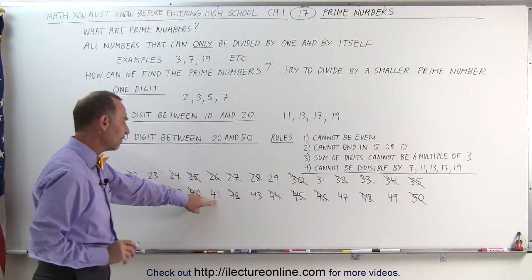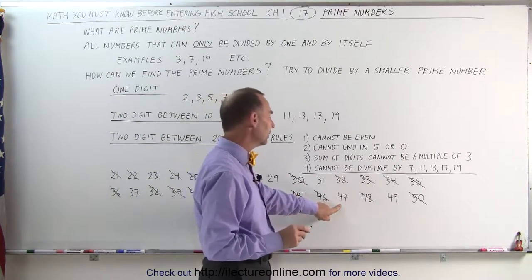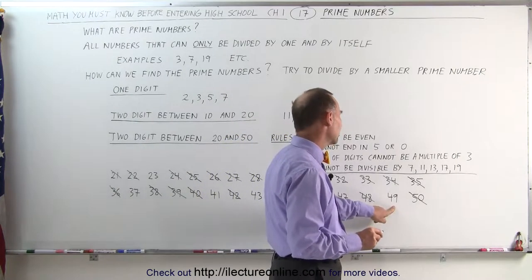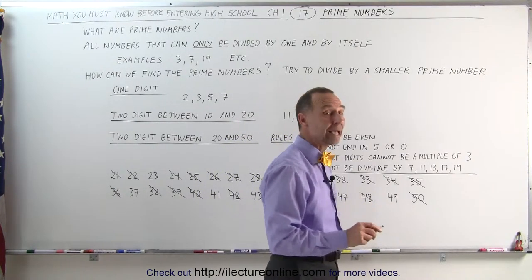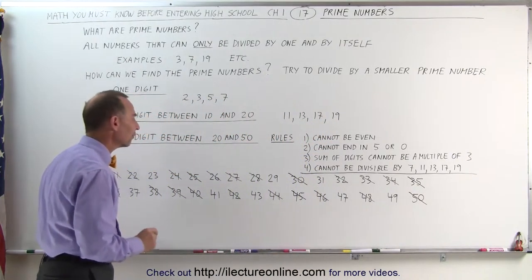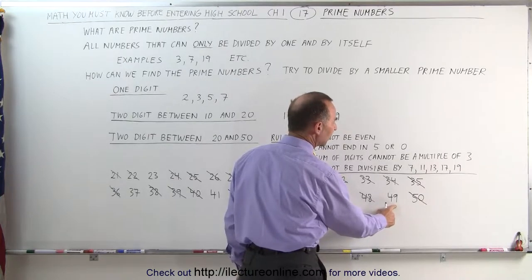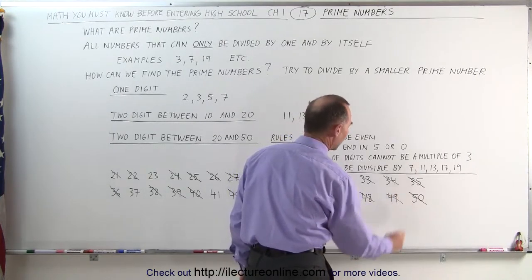4 plus 1 is 5. 4 plus 3 is 7. 4 plus 7 is 11. 4 plus 9, that's 13. Okay, so we can't use that rule to get rid of those. Let's see if there's anything else we can get rid of. Well, first of all, we know that 49 is 7 squared, which means that can be divided by 7. That's not a prime number.